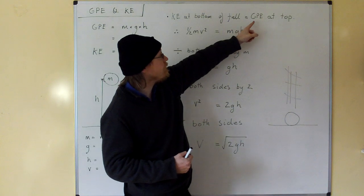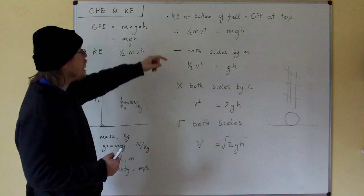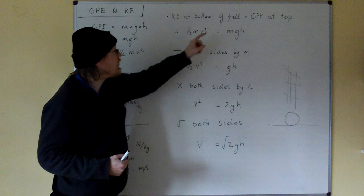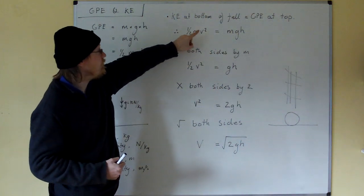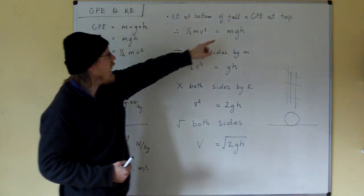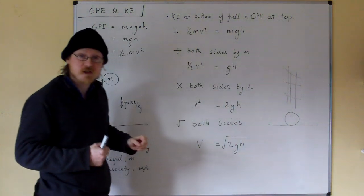Well, mgh equals the gravitational potential energy at top. So what we do is, we put these two equations equal to each other. Half mv squared for the kinetic energy, and mgh for the gravitational potential energy.